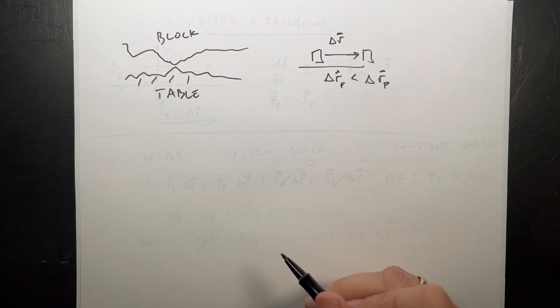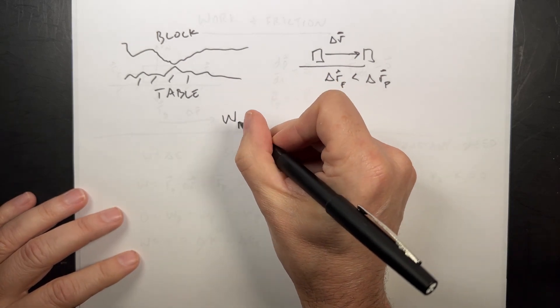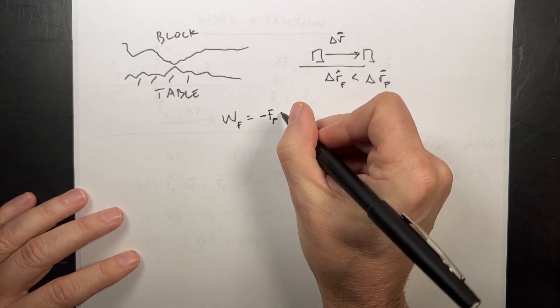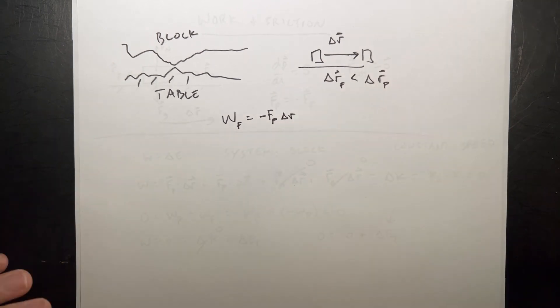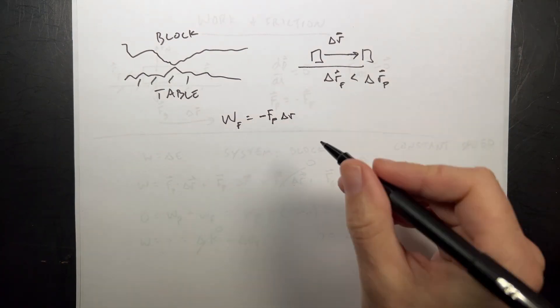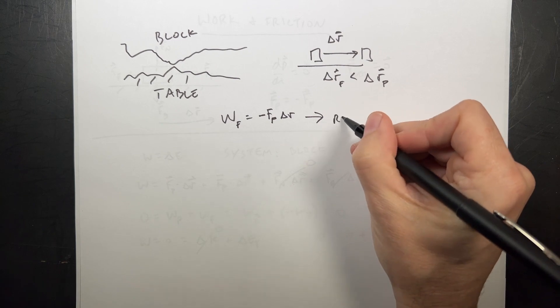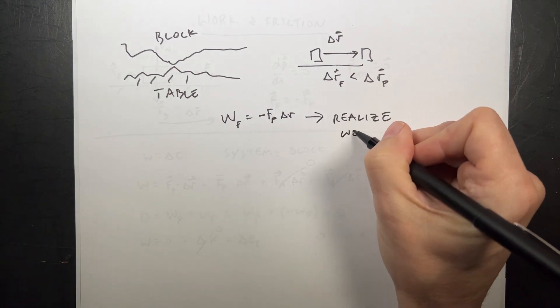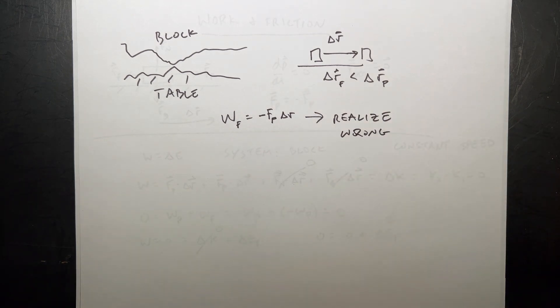So can we calculate the work done by friction? We can. We can say work done by friction is negative Fp delta R. I already took the dot product, so that's just scalars right there. But we have to realize this is not the whole story. We have to realize that it can't be wrong. It can still be useful, but we know it's wrong. And that's something that we can do. We can do things that we know are wrong but are still useful. And that's what happens in friction.